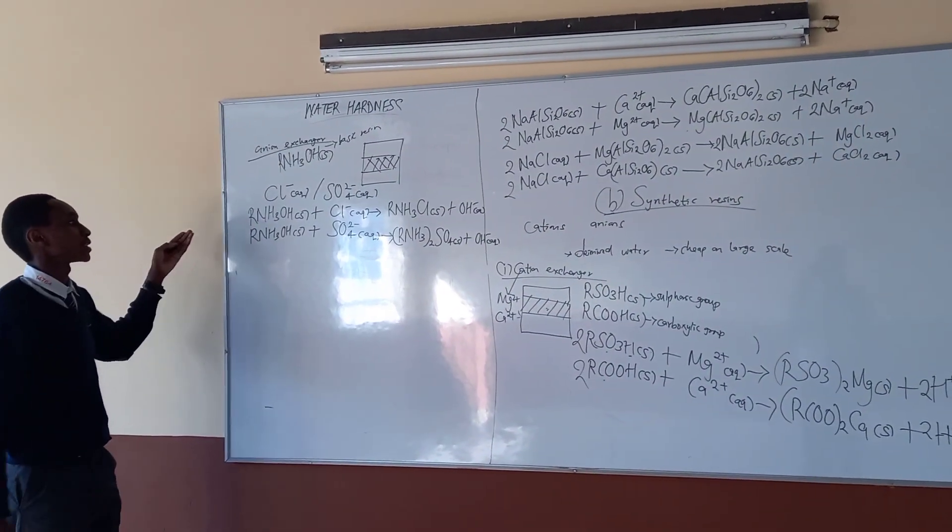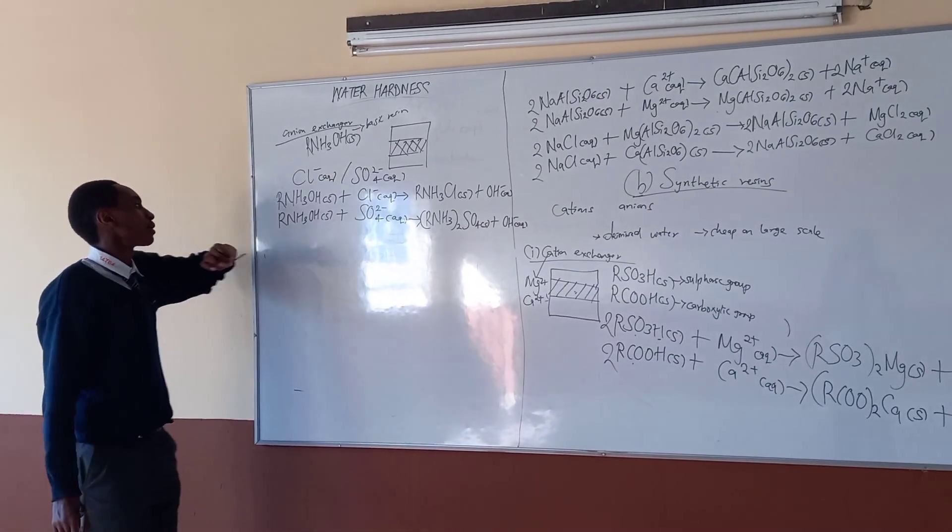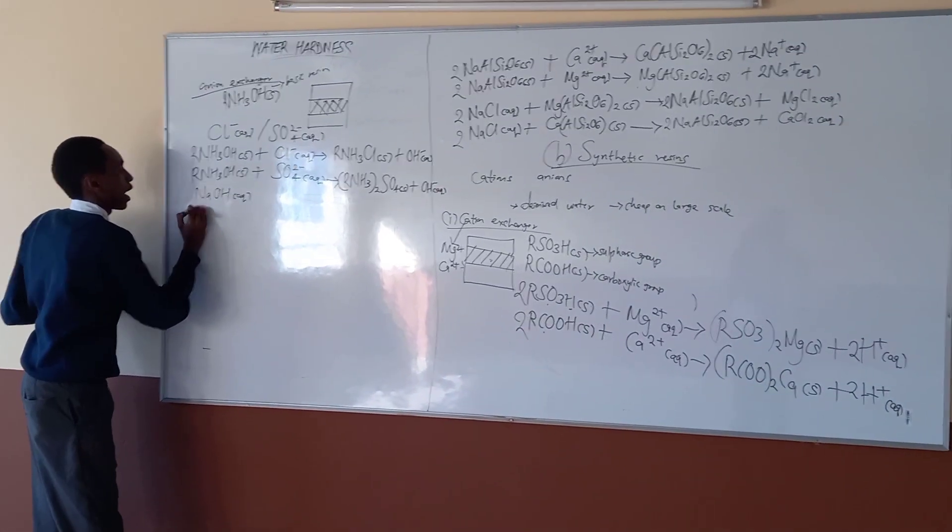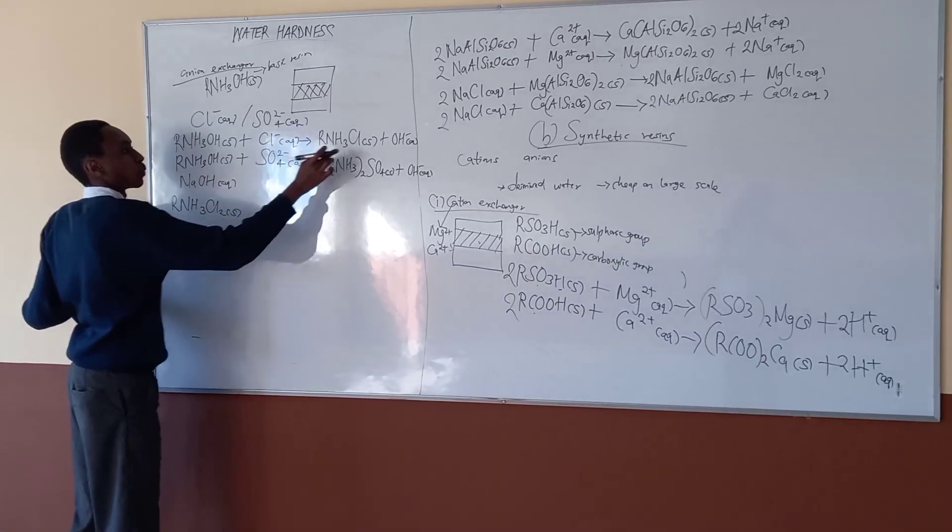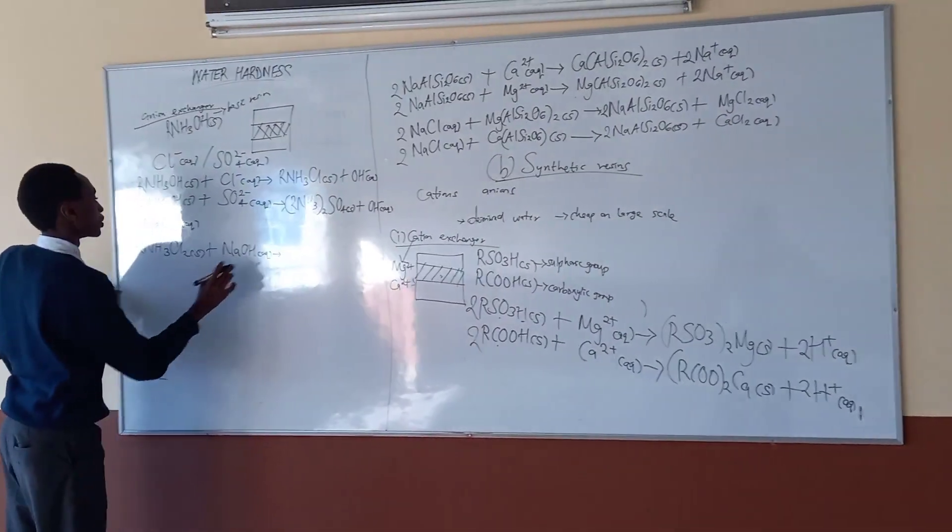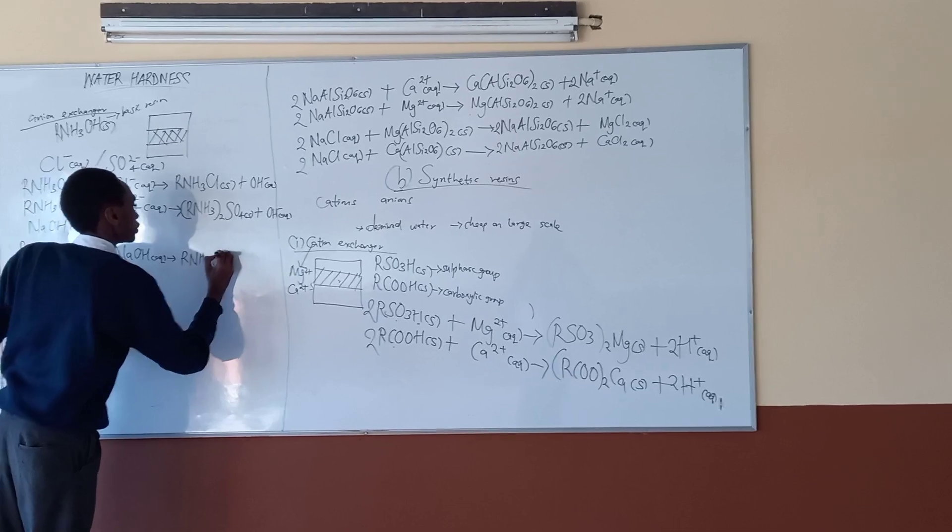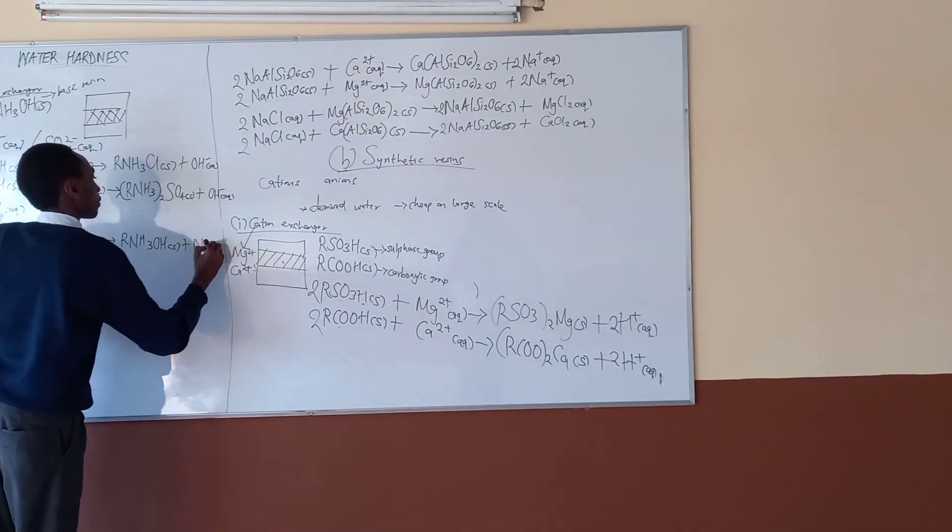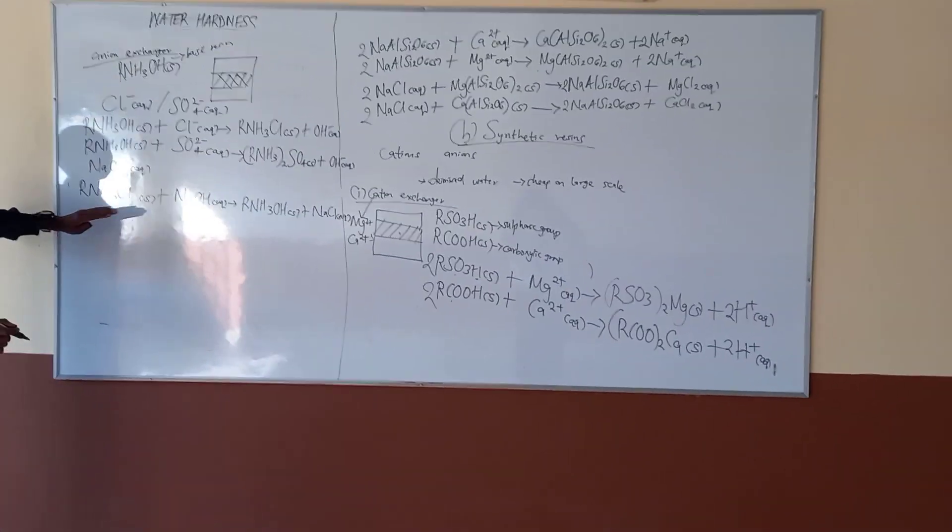Over time, obviously, we get to use up the basic resin. What we do is we flush this chamber, the tank, using sodium hydroxide aqueous. So, RNH3Cl solid, we want to remove this from the tank, plus sodium hydroxide aqueous. So we get to restore the hydroxide to the basic resin. So it becomes RNH3OH solid plus sodium chloride aqueous. And that is how we have removed the chlorides from the basic resin.